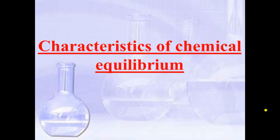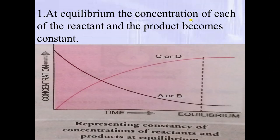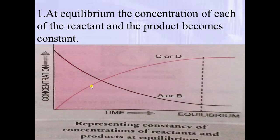The characteristics of chemical equilibrium are as follows. First, at equilibrium, the concentration of each reactant and product becomes constant. On a graph of concentration versus time: concentration of reactants decreases (decreasing curve), concentration of products increases (increasing curve), and then a stage comes when both become constant — that is the equilibrium point, shown as a straight horizontal line.